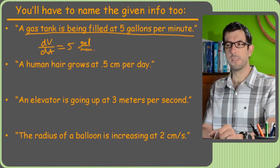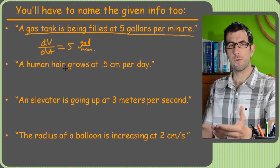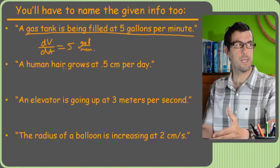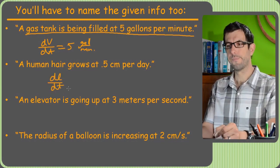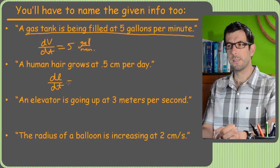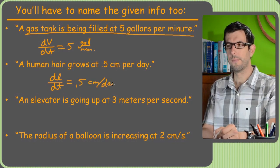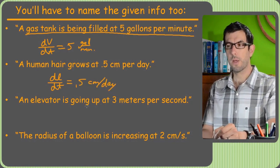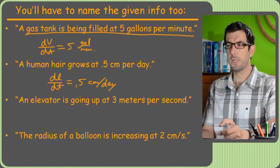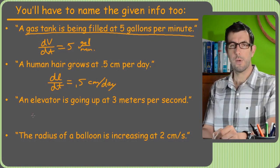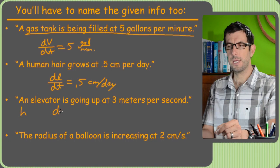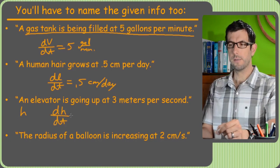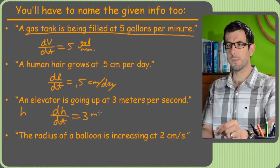A human hair grows at 0.5 centimeters per day. Well, that's the rate of change of the length of the hair, right? So dL/dt equals 0.5 centimeters per day. An elevator is going up at three meters per second. So what do I call that? I don't know. Maybe the height of the elevator is just H. So the rate of elevator's going up is dH/dt and they're saying that's three meters per second.